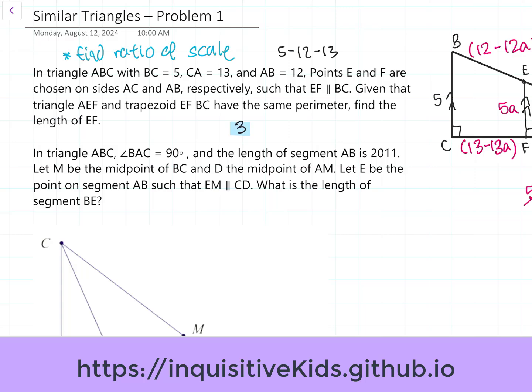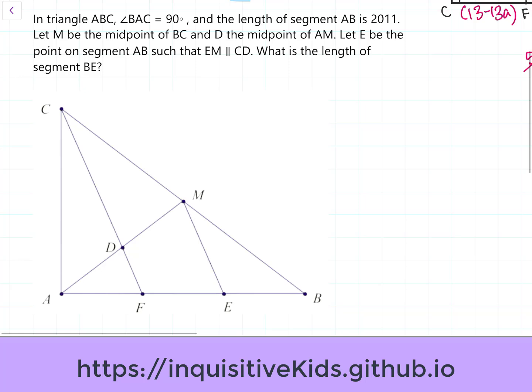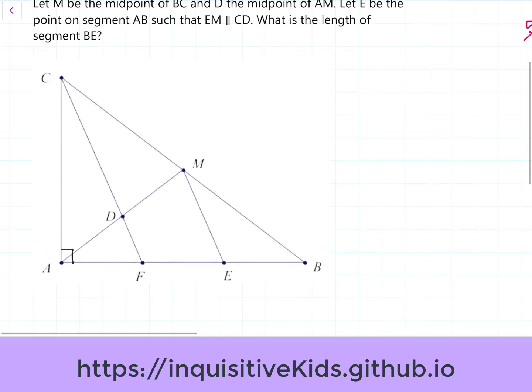Now, let's take a look at a slightly more advanced second problem. In triangle ABC, angle BAC is 90 degrees, and the length of segment AB is 2011. Let M be the midpoint of BC and D the midpoint of AM. Let E be the point on segment AB such that EM is parallel to CD.